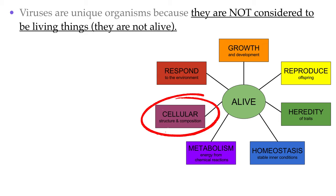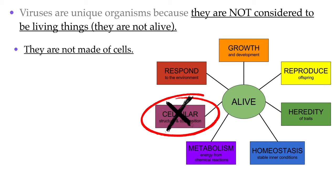First and most obviously: living things must be made of cells. Viruses are not made of cells. A virus particle is made up of a set of genes bundled within a protective protein shell called a capsid. Some virus strains like coronavirus do have an extra lipid envelope, but that still does not make a virus a cell — you will not find any cytoplasm, ribosomes, enzymes, or organelles inside that envelope.